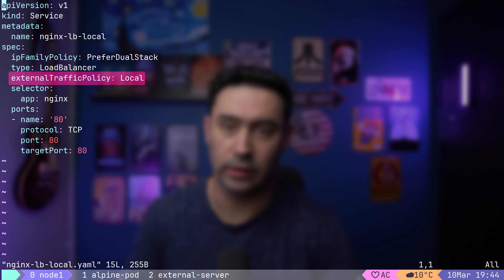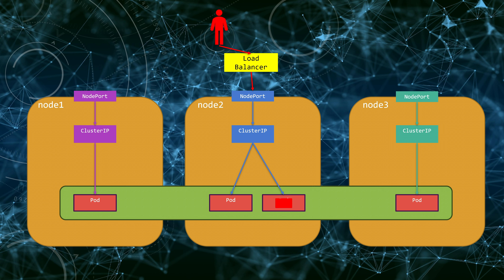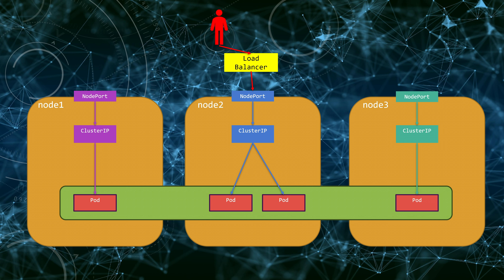Another thing I'd like to show is local traffic policy. If we set our externalTrafficPolicy to Local, the traffic will arrive only at local pods within a node. If traffic arrives at node 2, it will go to pods on node 2; if traffic arrives at node 3, it will be directed only to pods on node 3. Because kube-proxy is not involved, your pods can see the real IP the traffic originates from. In BGP mode, traffic will be split across multiple nodes, but the split will be uneven based on pod distribution. In Layer 2 mode, traffic arrives only via a single node, so only pods on that node will process the traffic.